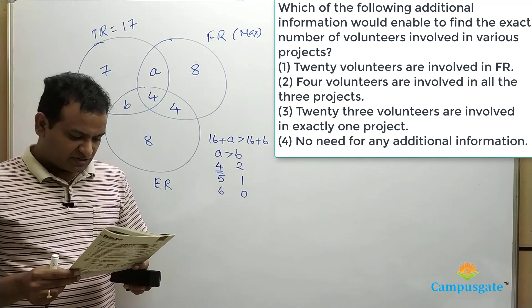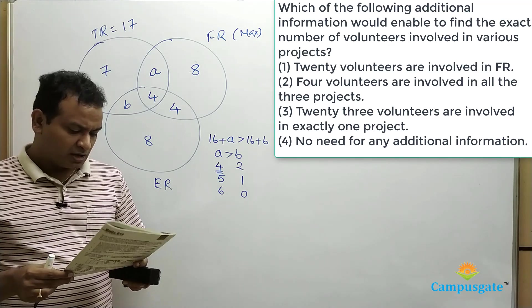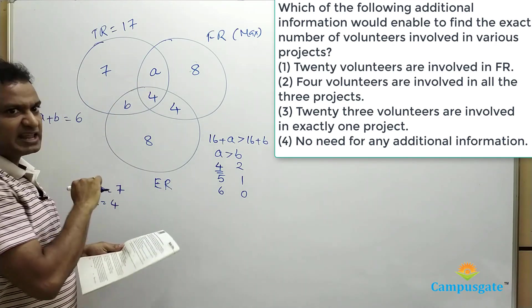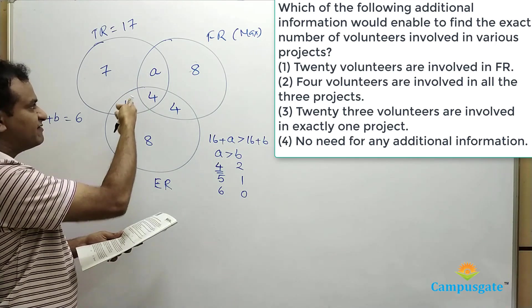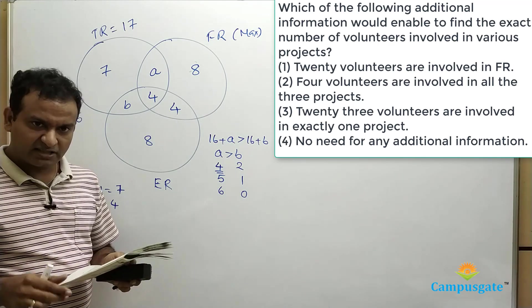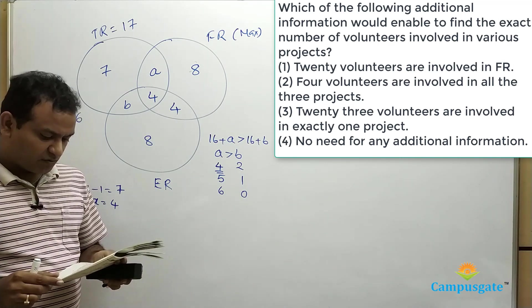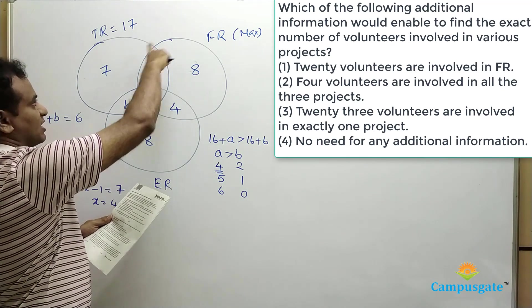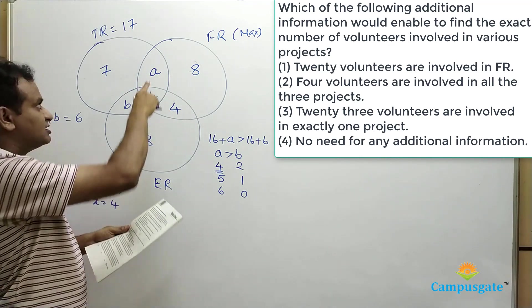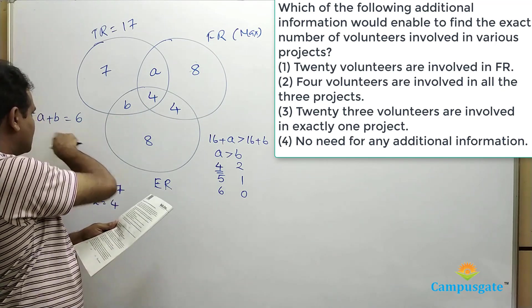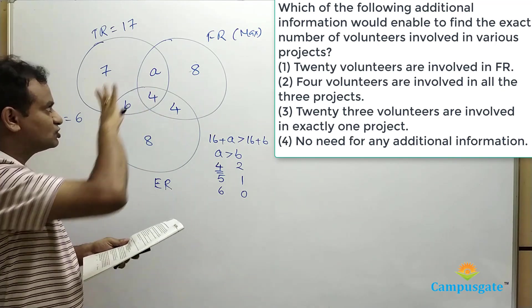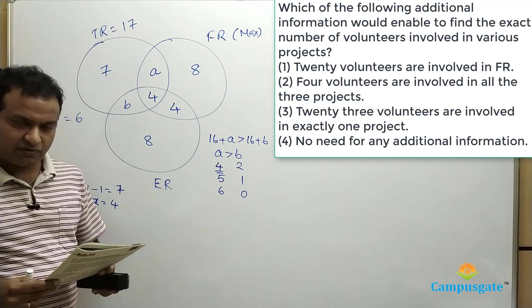Next question: Which additional information would enable us to find the exact number of volunteers in various projects? We are left with only two variables A and B. If we know either A or B, we can find both. If 20 volunteers are involved in FR, then 4 + 4 + 4 + A + 8 = 20 gives A = 4, and immediately B = 2. So the first clue alone is sufficient, and the answer is option 1.